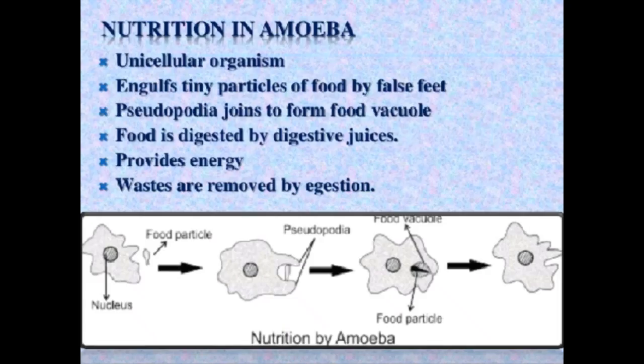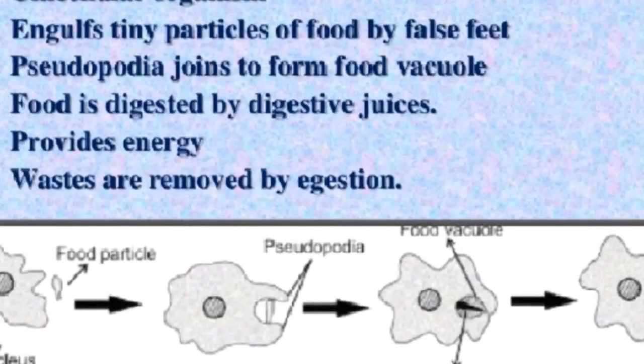First is nutrition in amoeba. Amoeba is a unicellular microorganism — we will see how it takes nutrition. It engulfs tiny particles of food by false feet. False feet here are pseudopodia. In the diagram you can see the nucleus and food particles.